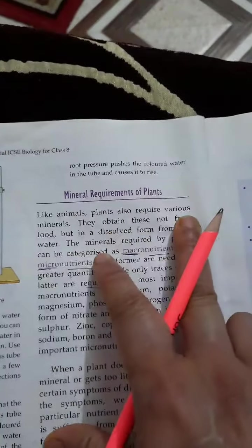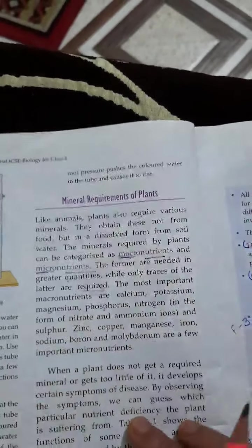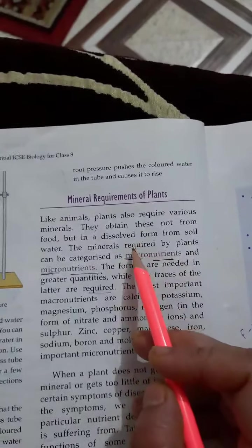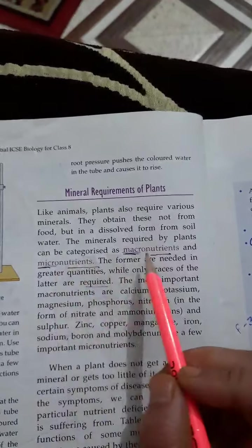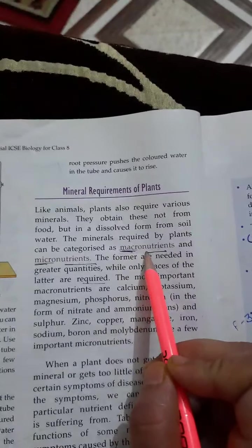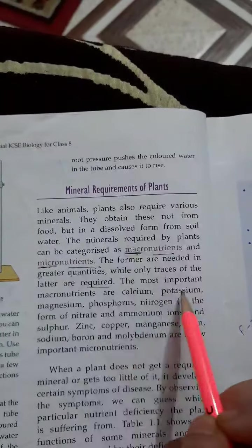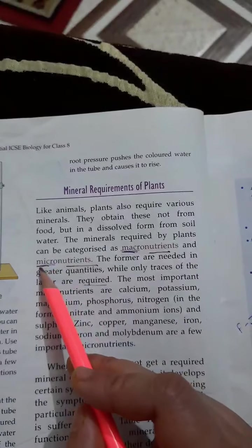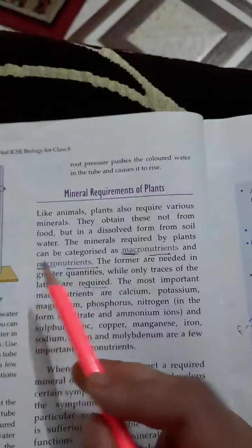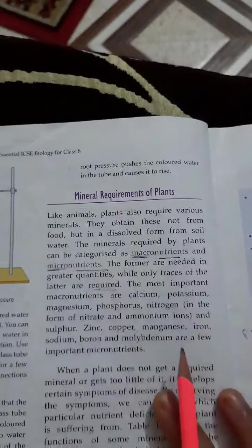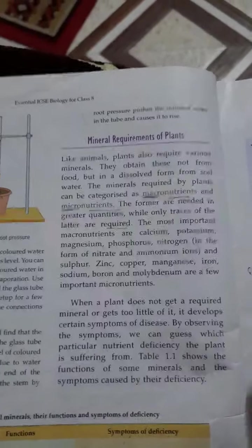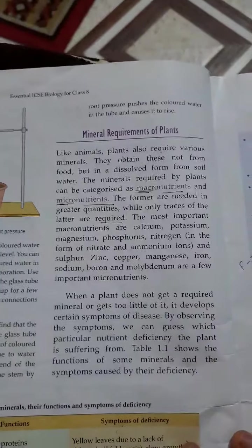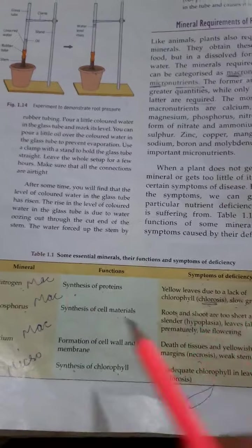Next, mineral requirement. Like all living organisms, plants also need nutrients. There are two types of nutrients required by the plant: macronutrients and micronutrients. Macronutrients are required in large amounts such as calcium, potassium, magnesium. Micronutrients are required as traces only like zinc, copper, manganese, iron. If these minerals are not properly obtained, plants get deficiency and can develop diseases.